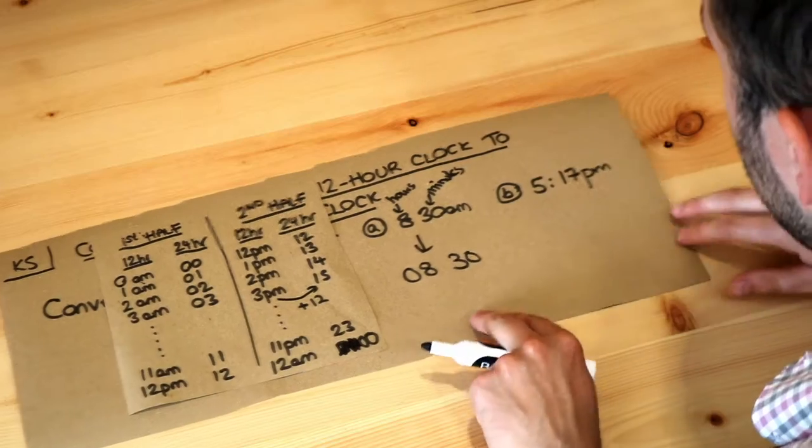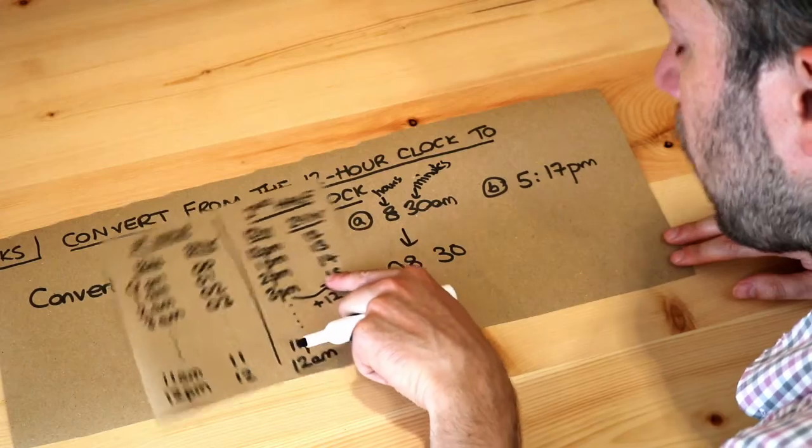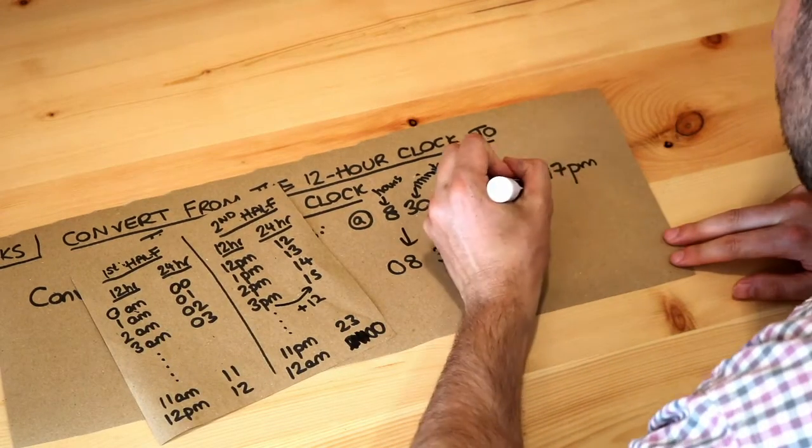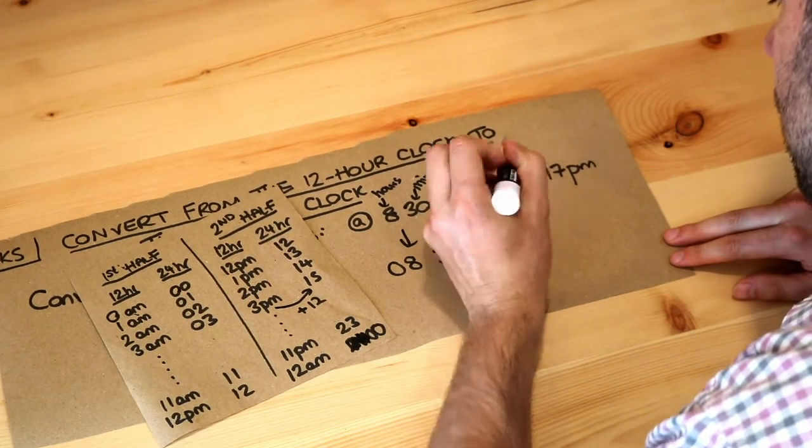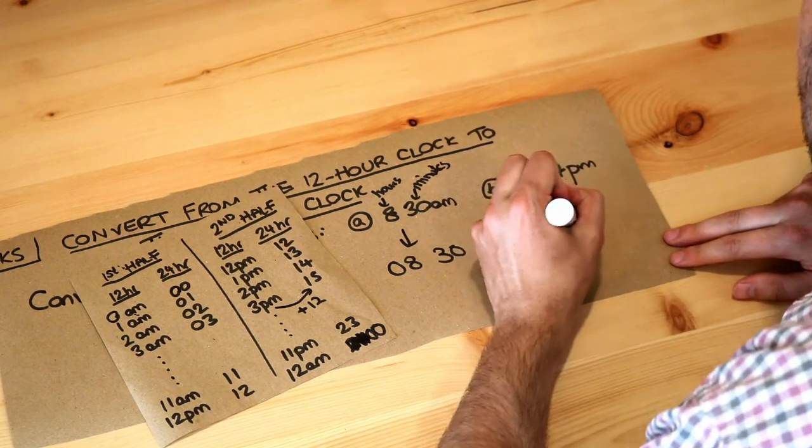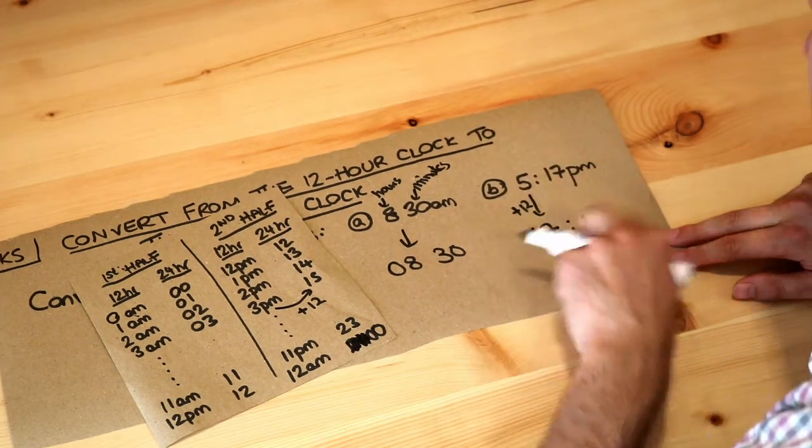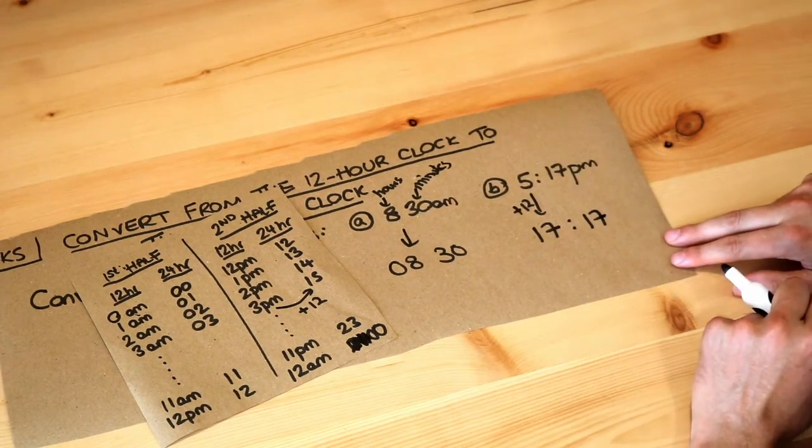What about the second one? Now this one is PM and it's after 1 PM. So we need to add 12 to get the hours. 5 plus 12 gives you 17, so it'll be 17 hours. Then just coincidentally, the number of minutes is also 17, so the 17 just stays as 17. And we don't put AM or PM on the end.